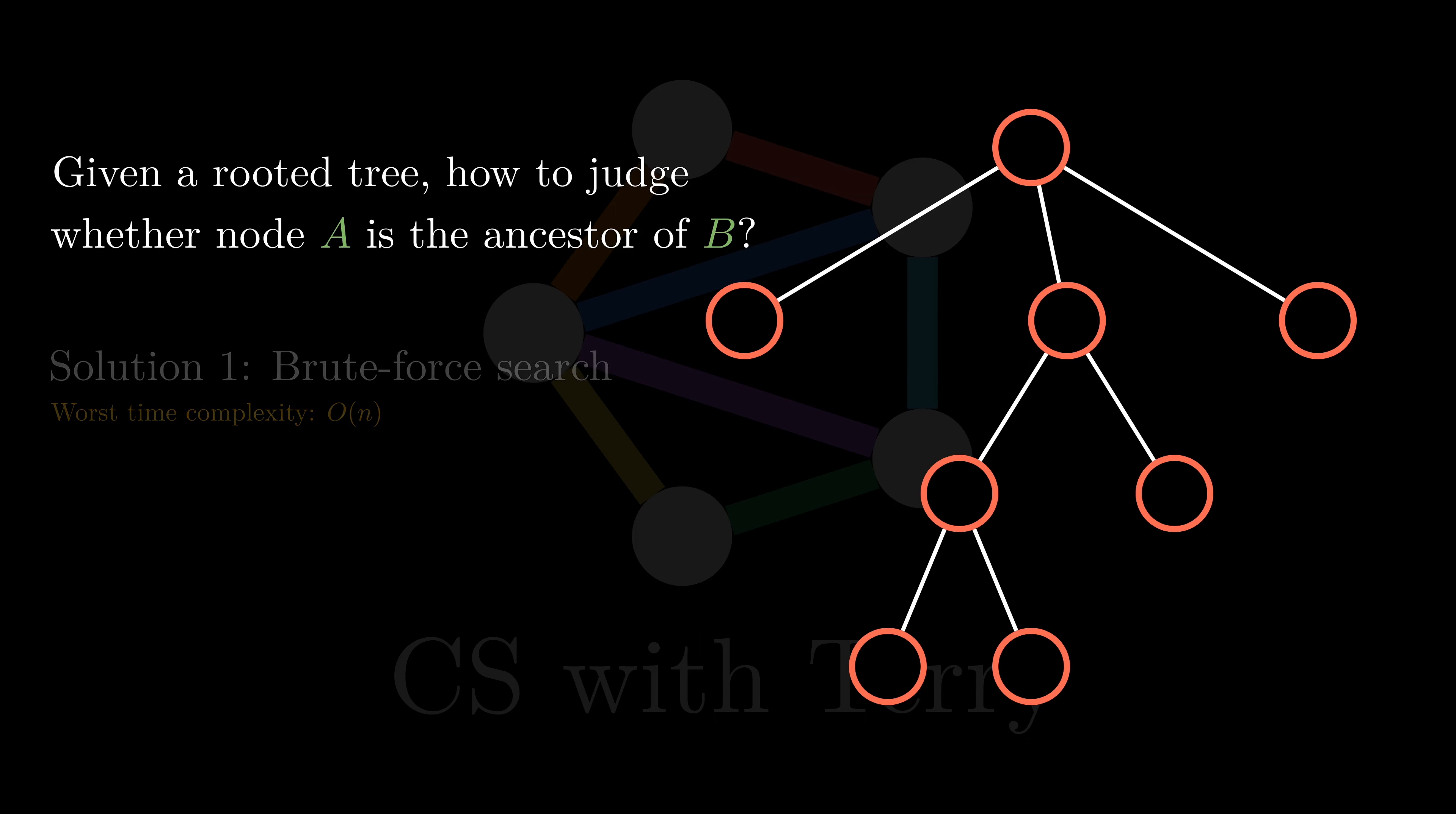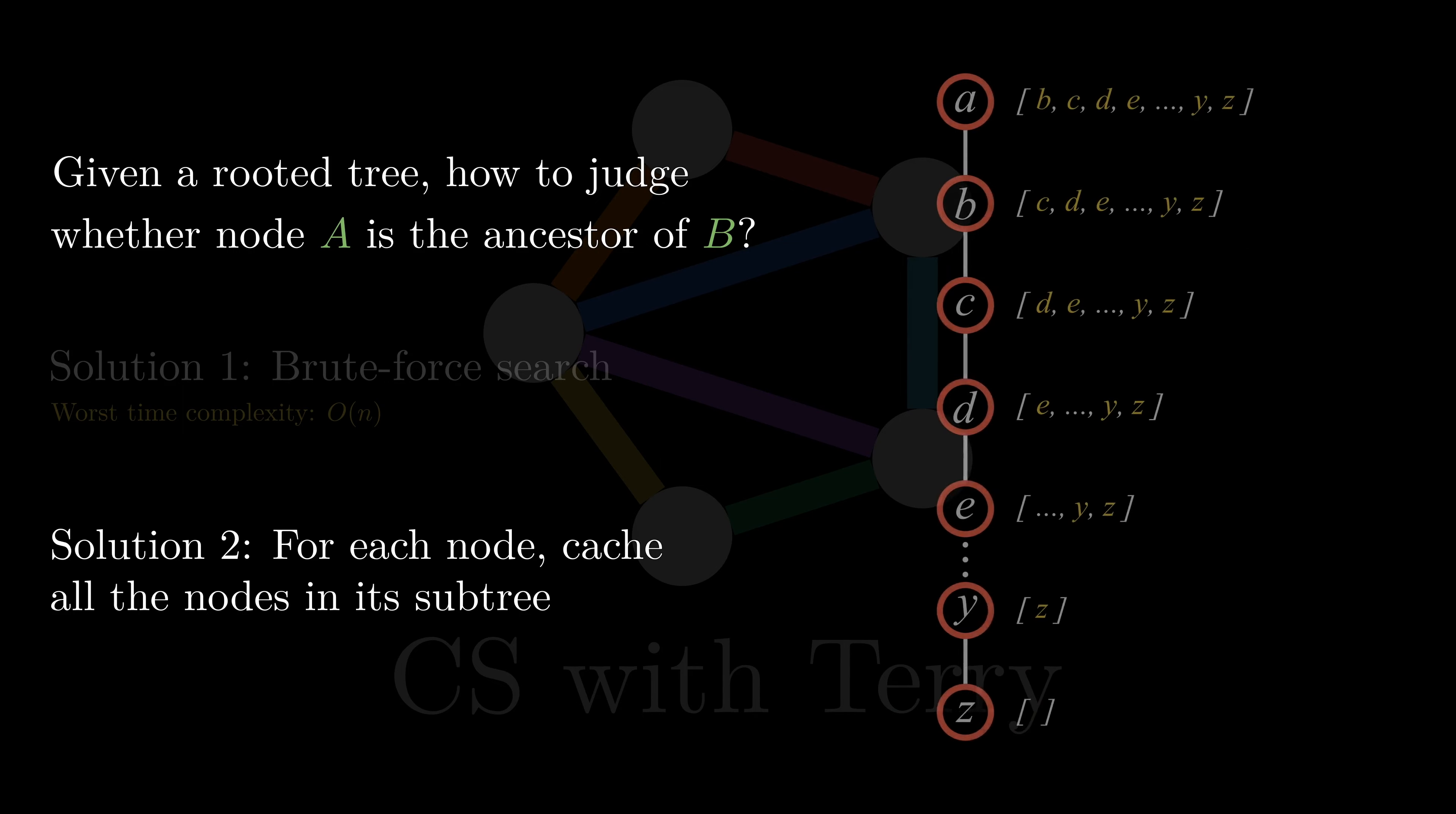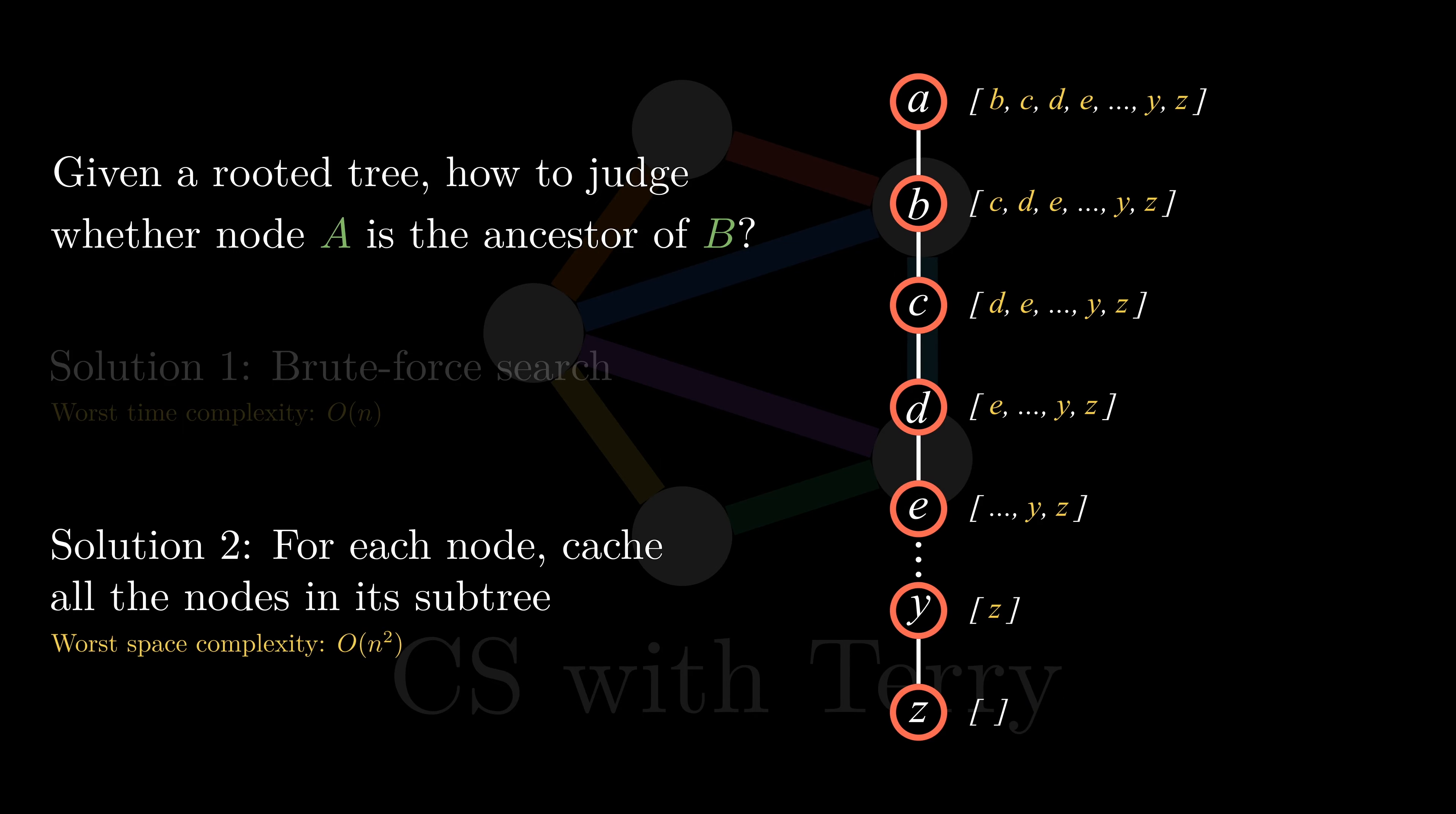Another solution that we can easily think of is to cache each node or its subtree into a hash table, like this. This way, every time you query the hash table, you can quickly determine whether a node is an ancestor of another node. However, in the worst case, the space complexity of this algorithm is O(n²). It's not very efficient either.